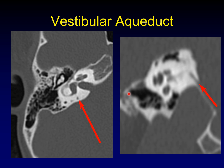Everyone's familiar with the vestibular aqueduct. This is just to show you where it is normally on an axial image. If you're having trouble seeing it on an axial image, it's better depicted on a sagittal image like here. If you do an oblique reconstruction, you can really lay it out beautifully and show how its posterior end flares out, but usually you can tell just from the axial images if there's anything abnormal about the vestibular aqueduct.